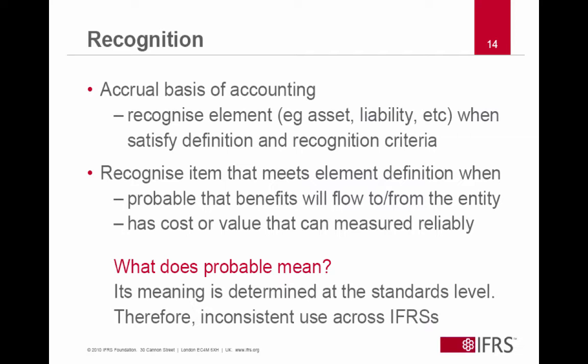This part of the framework has been a little bit problematic when people are trying to understand it, because we're not sure what the word 'probable' means. Does it mean any positive probability? Does it mean more likely than not? It's undefined. And as a result, the meaning of the word 'probable' has been left to be determined at the standards level, and any time you do that, you run the risk of having inconsistent definitions across IFRS.